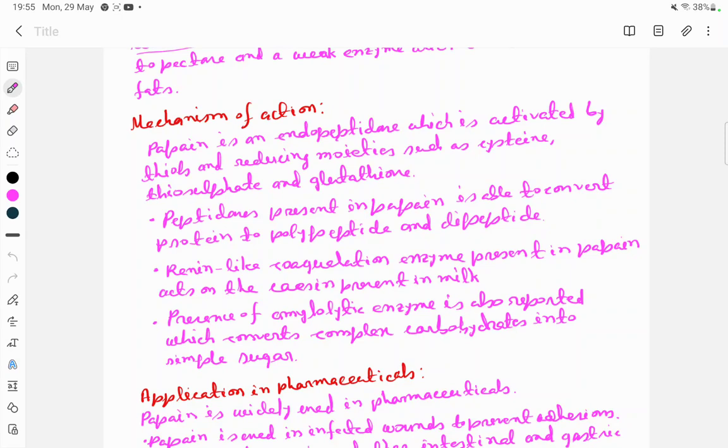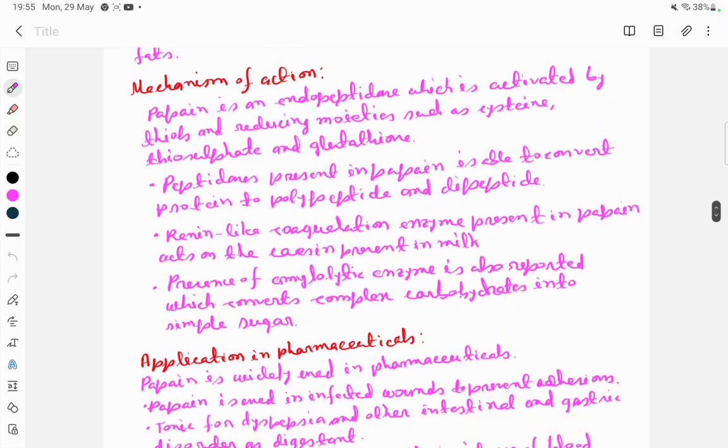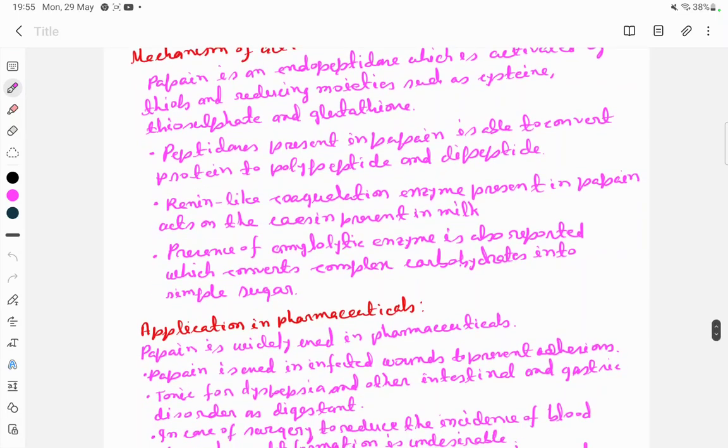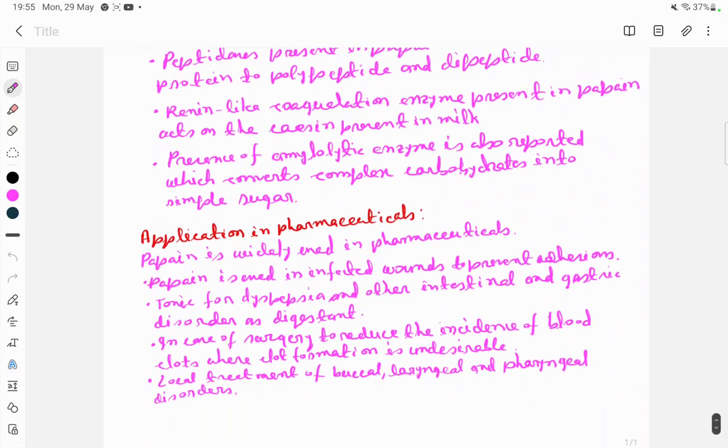Peptidases present in papain are able to convert proteins to polypeptides and dipeptides. Renin-like coagulation enzyme present in papain acts on the casein present in milk. The presence of amylolytic enzyme is also reported, which converts complex carbohydrates into simple sugars.